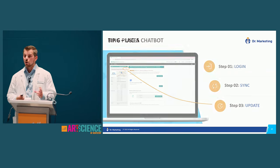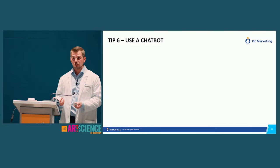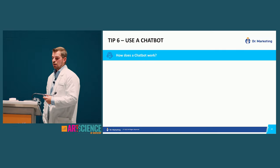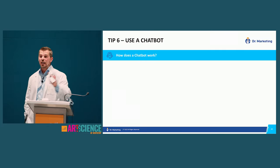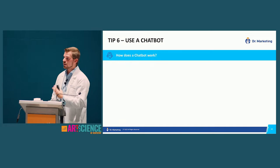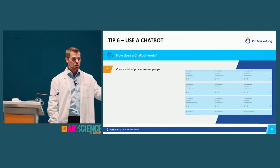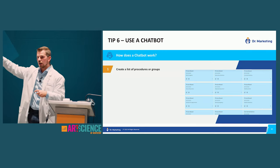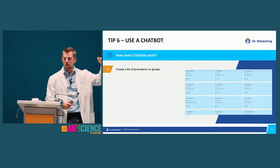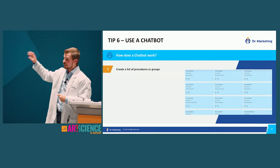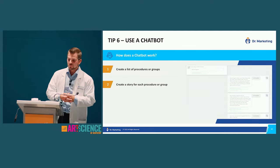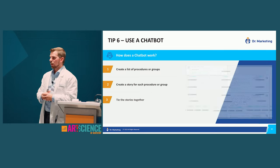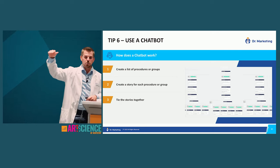Once that's set up, add conversion tools to your website: click-to-call buttons, web forms, book-online options, or a chatbot. There are two types of chat systems: live chat requires someone to physically respond; a chatbot is automated. To build the bot, create scenarios based on procedures — cosmetic, implants, etc. Build a story for each: present information, then offer options at the end, like booking an appointment or learning about a specific service.